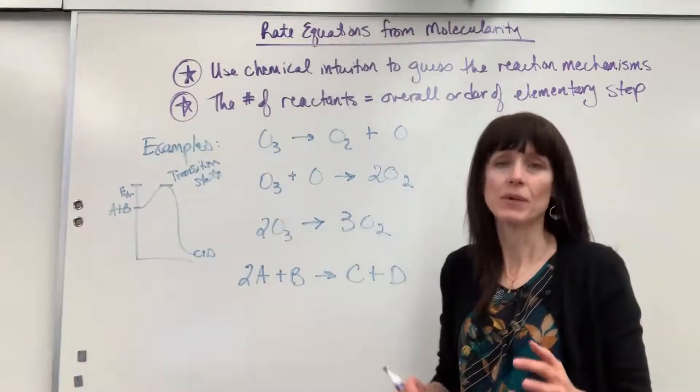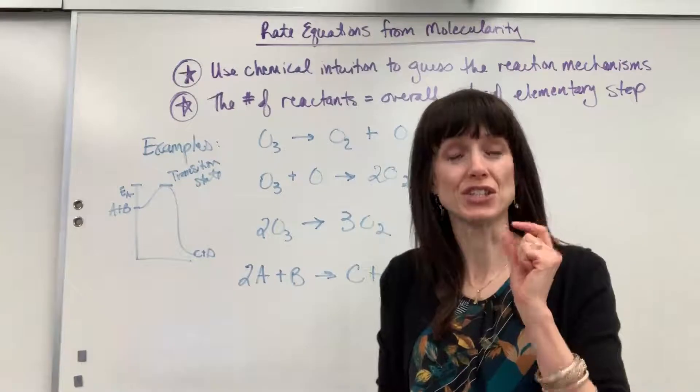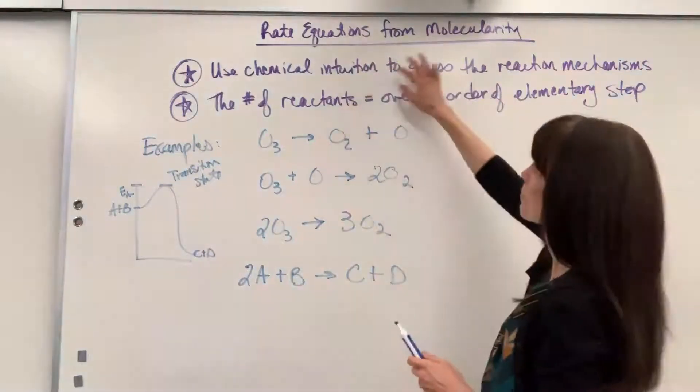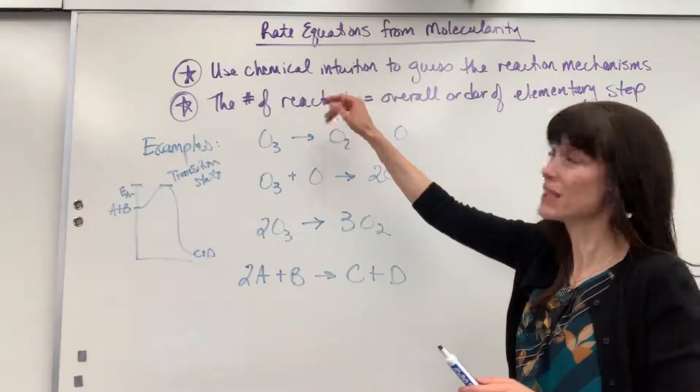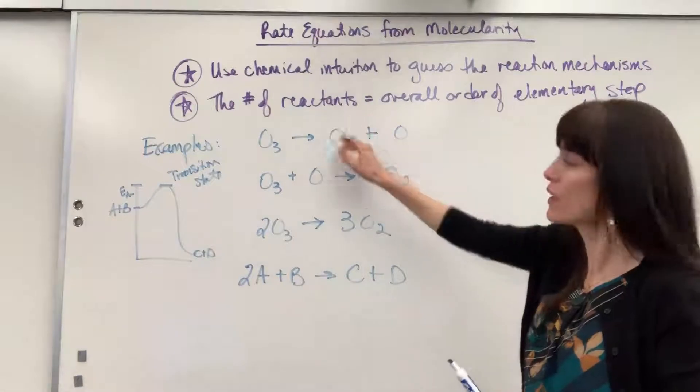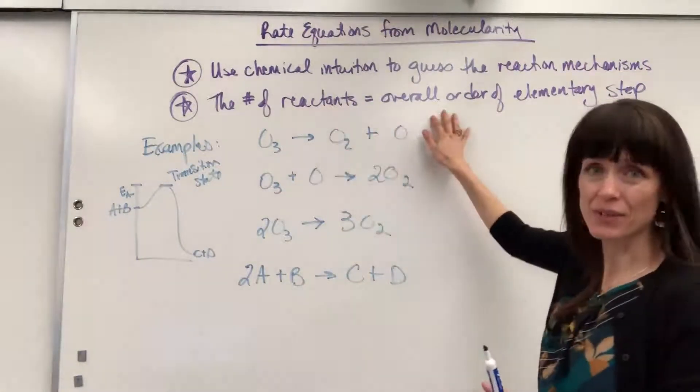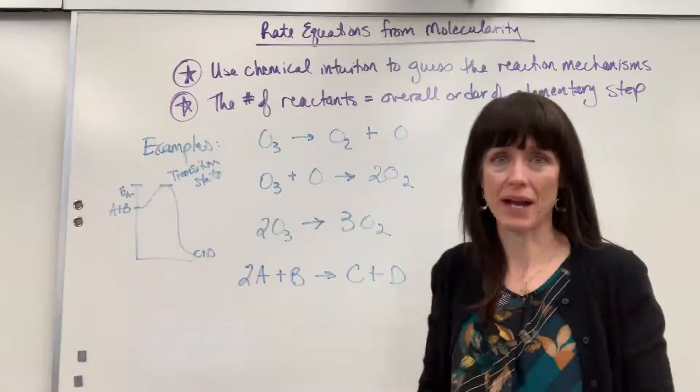Now that having been said, because this is something that we're theorizing, there's a cheat when we write the rate equations, when we write the rate laws. And here's the cheat: the number of reactants equals the overall order of the reaction.